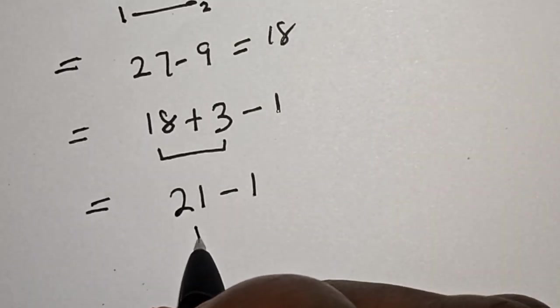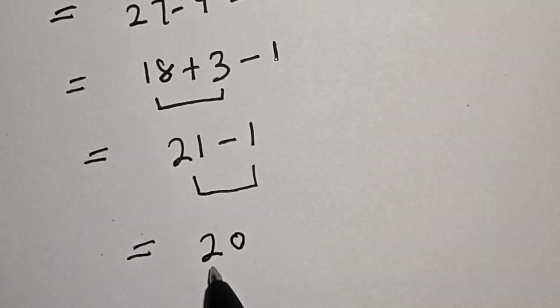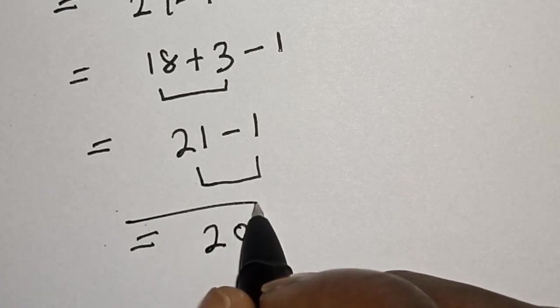Then let's work with this last 2. 21 minus 1 is equal to 20. And that is our final answer.